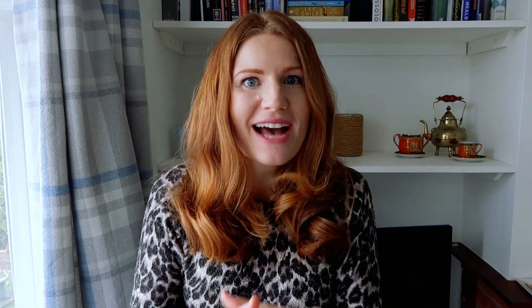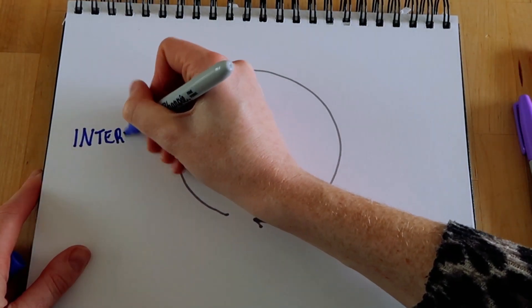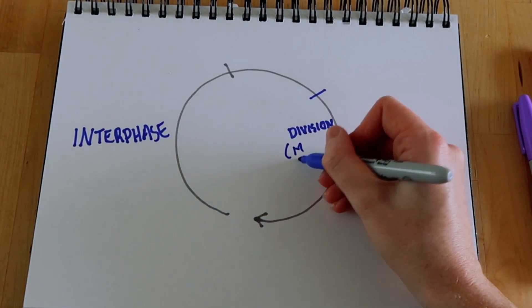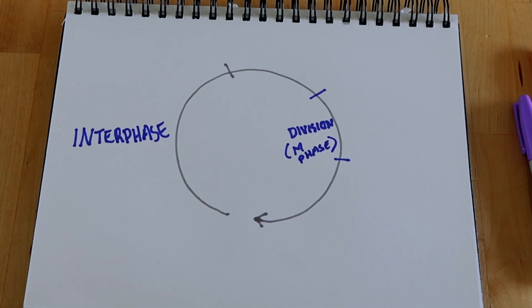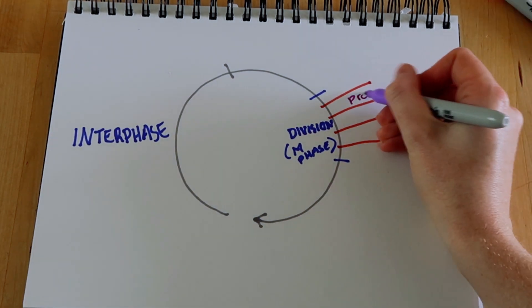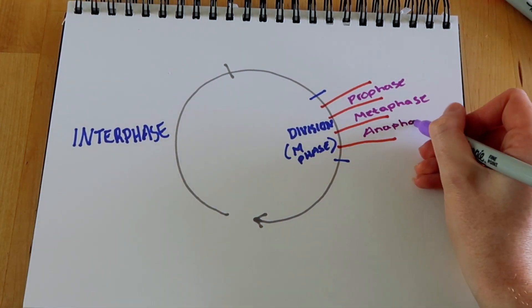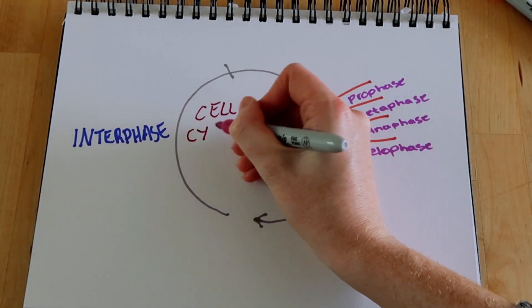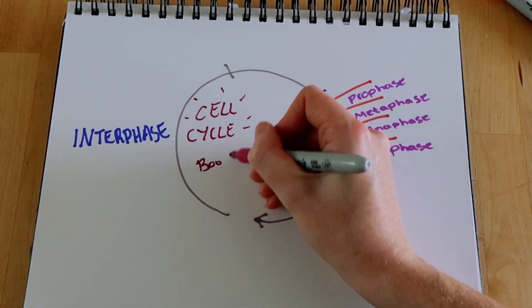This process of the cells dividing into two is known as cell division, and it happens within an overall cell cycle. The cell cycle has various different phases, like interphase, which is where the cell grows, and mitosis, where the cell divides. The mitosis phase can be split into further phases, like metaphase and anaphase.